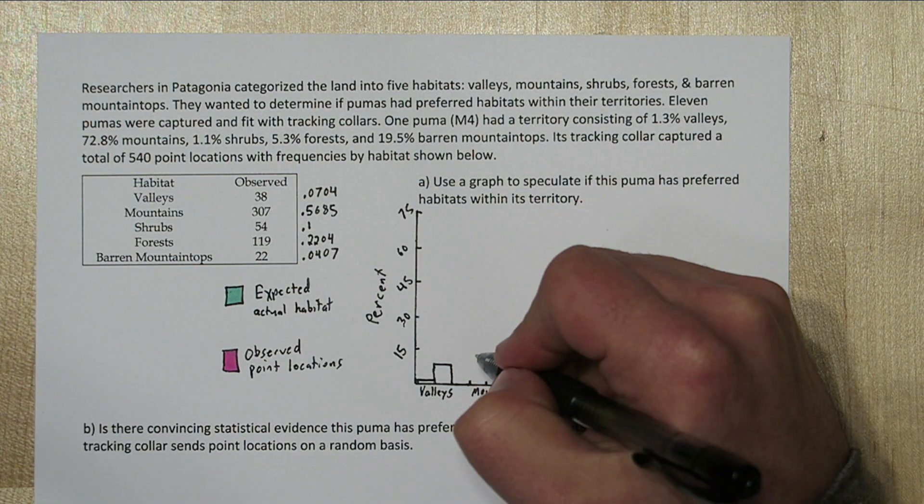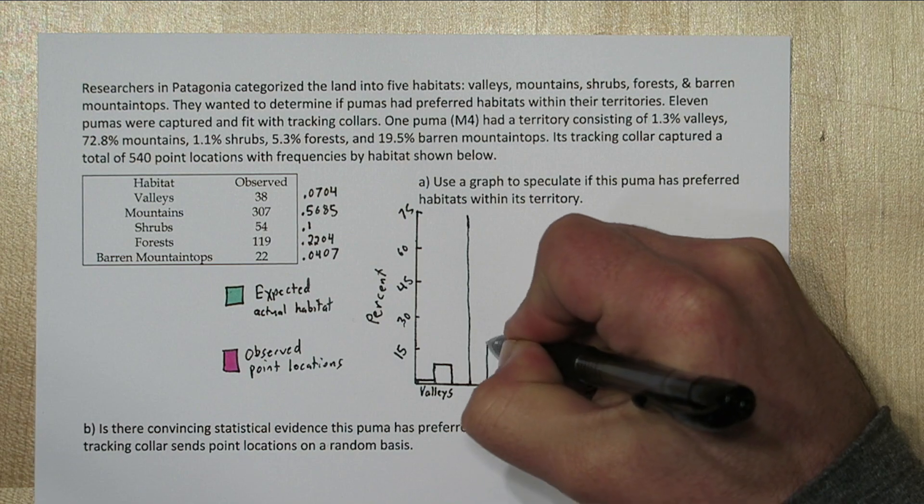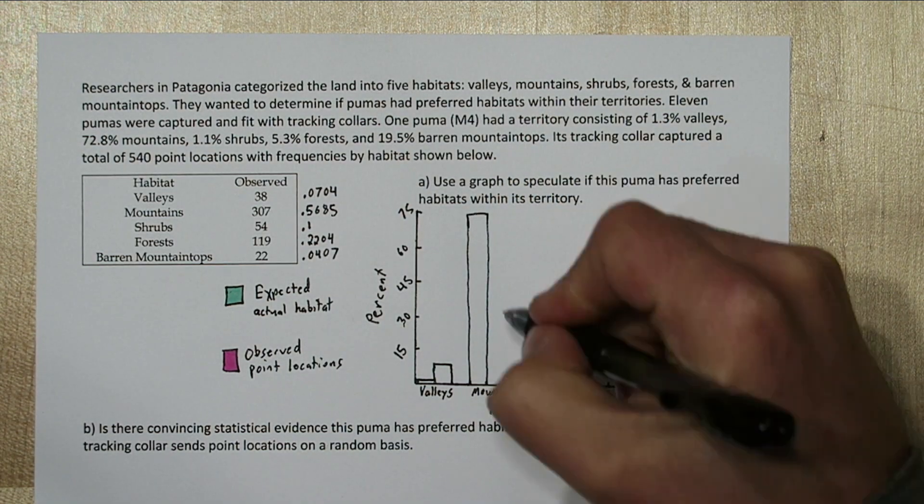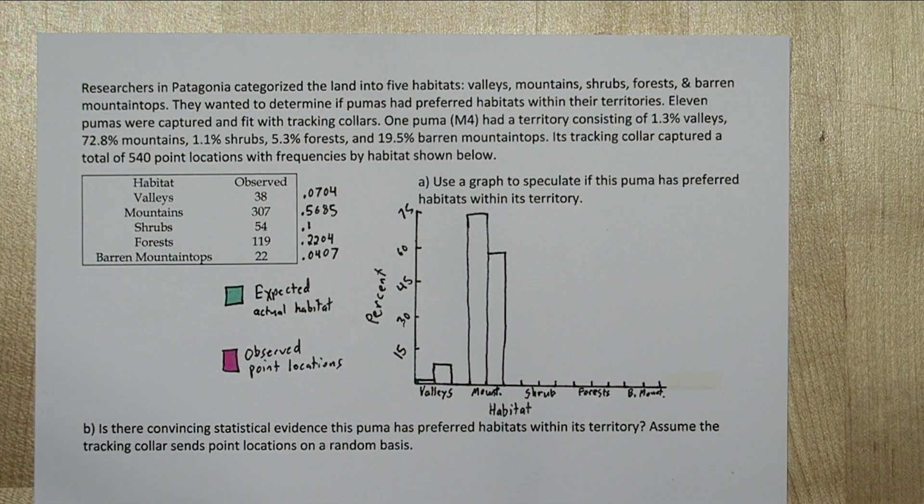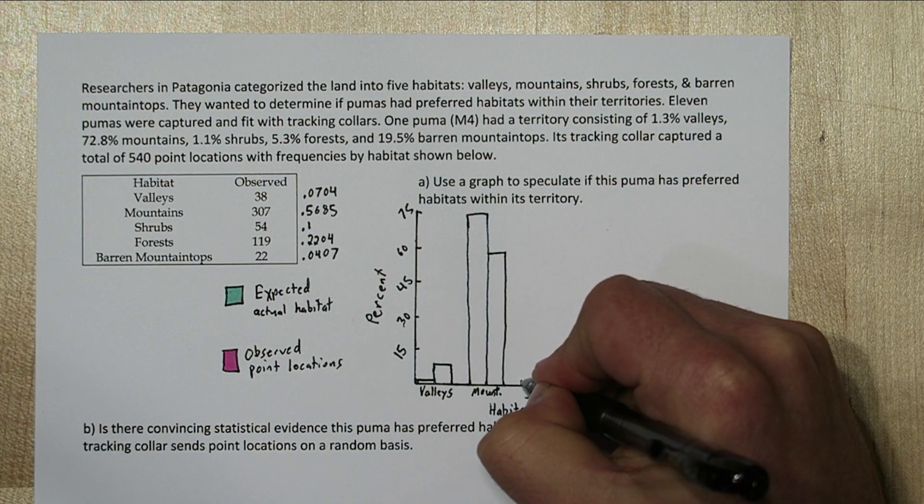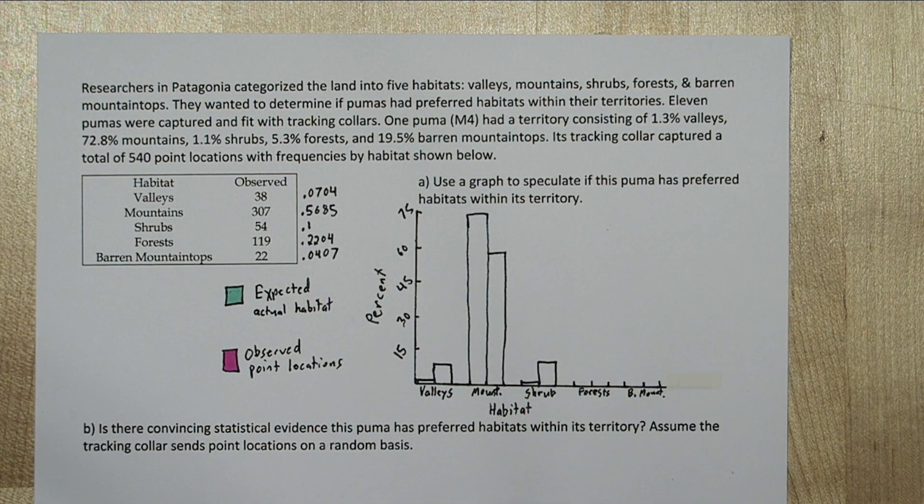72.8% of its actual habitat is mountains, but it only spent 57% of the time there. So only about 1.1% of the puma's habitat was shrubs, but it spent about 10% of the time there.